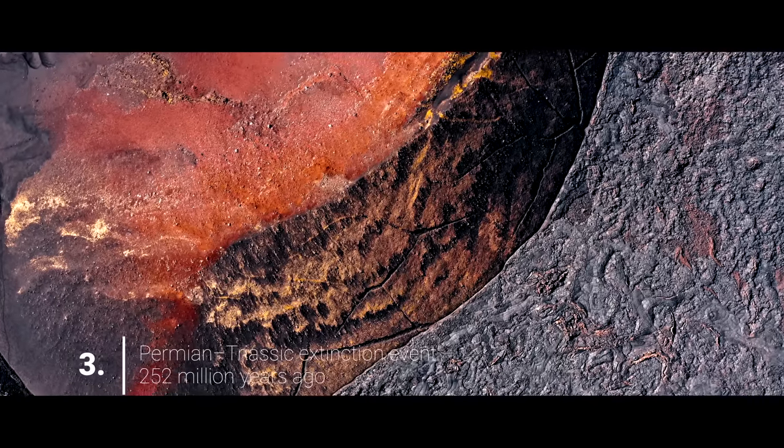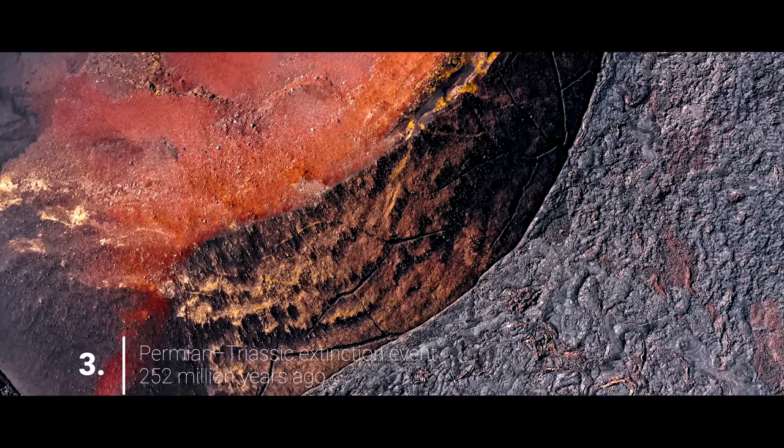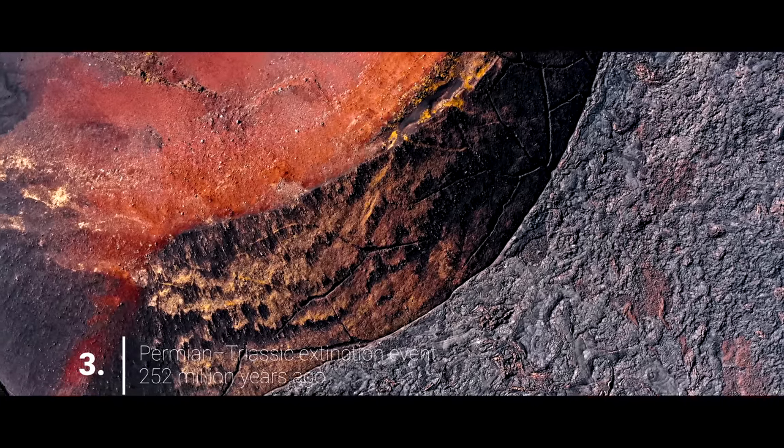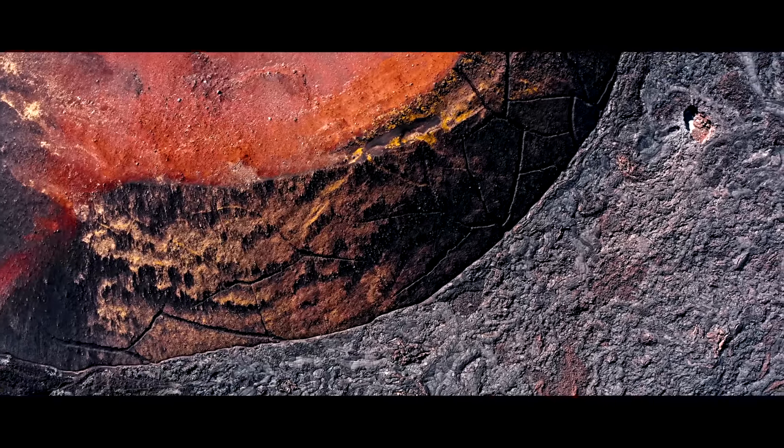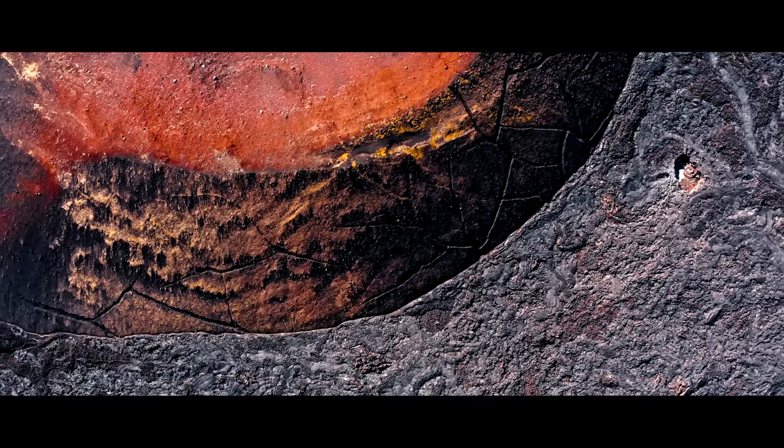252 million years ago, the Permian-Triassic extinction event happened, which is also known as the Great Dying, because this was the biggest wipeout of life on our planet, and between 90 to 96% of all species extinct.